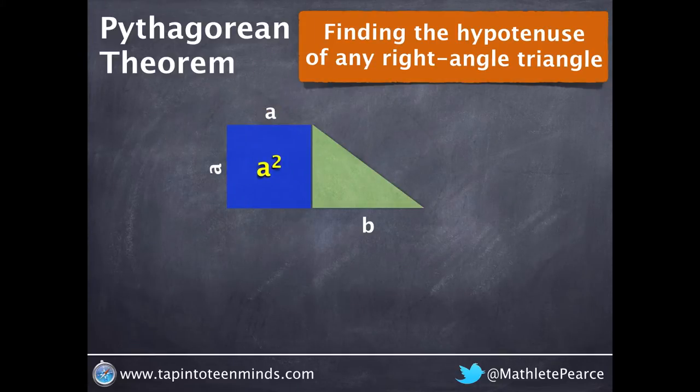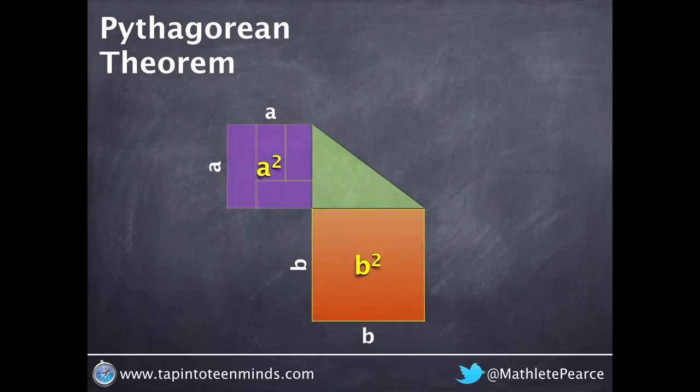So we'll square a to get a squared and square b to get b squared. We're now going to attempt to show that a squared plus b squared is equal to the hypotenuse squared.